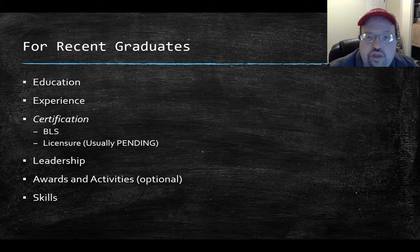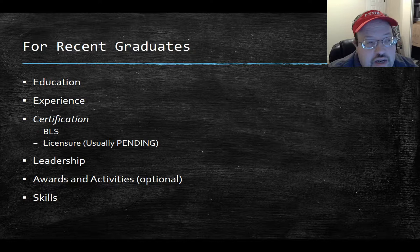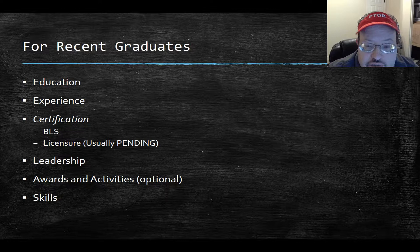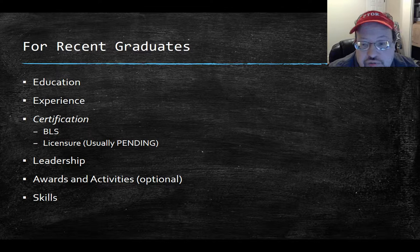For recent graduates, you're going to start with education, experience, certification section, basic life support, and licensure. Again, for PTA 170, you need to update this to 'pending' or 'in progress.' If you're in 140, leave it as is. Then include any leadership roles — serving as an officer within the program is a good one, or assisting with other activities.